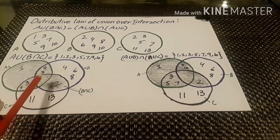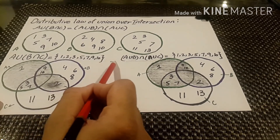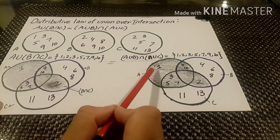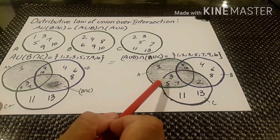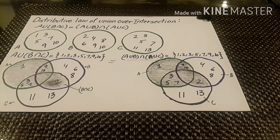We have solved the question according to the tabulation method and by Venn diagram. Hope you have understood the whole concept of distributive law of union over intersection and intersection over union. You will practice. Thank you.